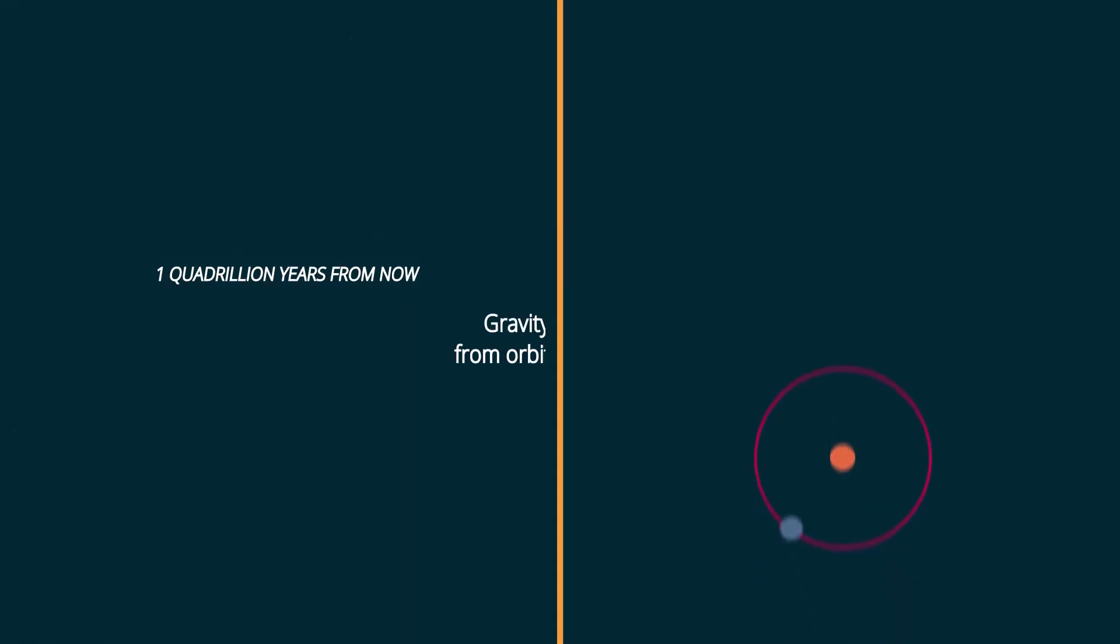One quadrillion years from now, gravity of passing stars will detach planets from orbits as our Solar System ceases to exist.